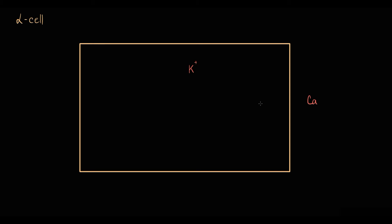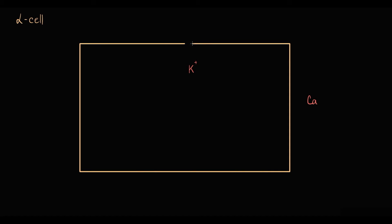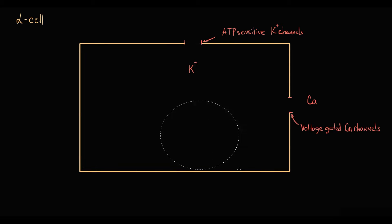Alpha cells on their membranes have ATP-sensitive potassium channels. They also have voltage-gated calcium channels, vesicles that have already formed glucagon molecules, and a GLUT1 transporter that transports glucose from the blood into the cell.